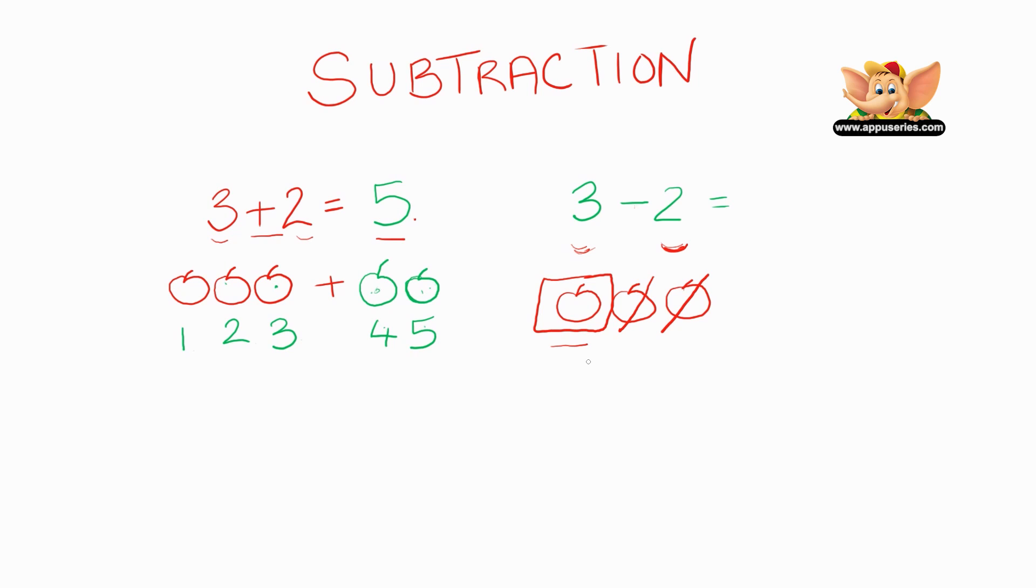Can you guess the answer for this one? Right! I'm pretty sure you guessed it. It's just 1 apple left. So, the answer is 1. You're left with 1 apple. So, addition is getting more of something. Here you're getting 5 apples. I hope you're hungry for 5 apples. And here, in subtraction, you're just taking something away and you're getting less of it. So here you only have 1 apple.